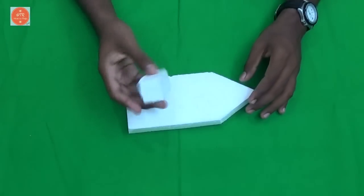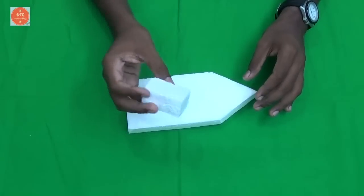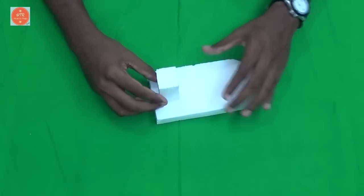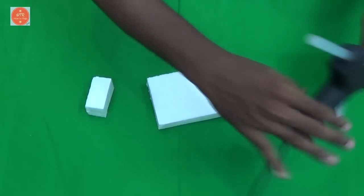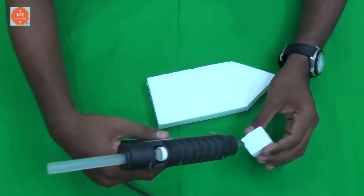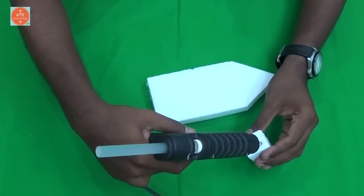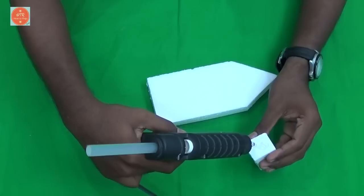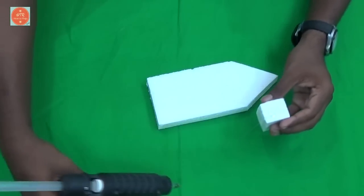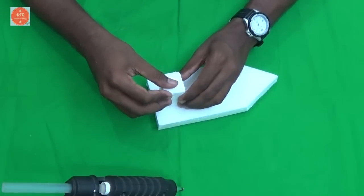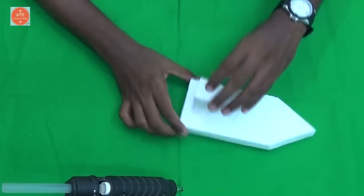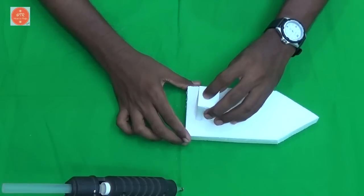Next, take the small piece of thermacol in these sizes and I am going to place it here using the glue gun. Wait for some minutes.